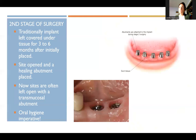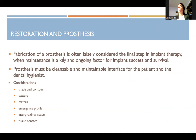In the second stage, they punch a hole through the tissue and you can see the implant. There are different kinds of abutments shown here — healing abutments, not final abutments. Restoration and prosthesis fabrication is often falsely considered the final step in implant therapy, when maintenance is actually a key and ongoing factor for implant success and survival.